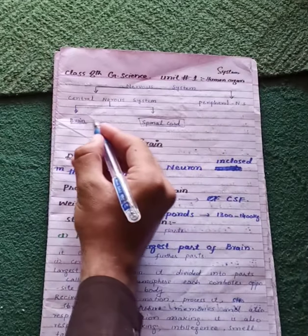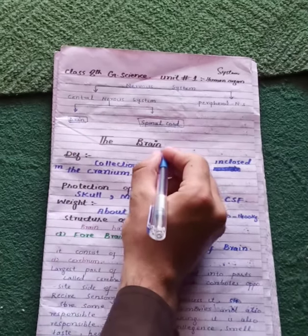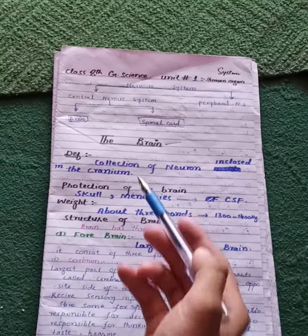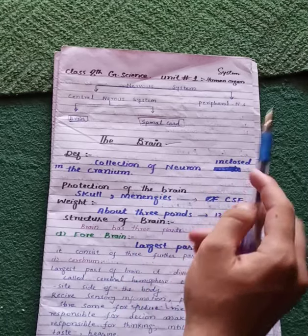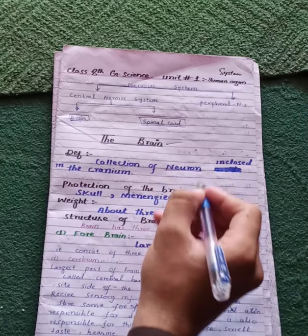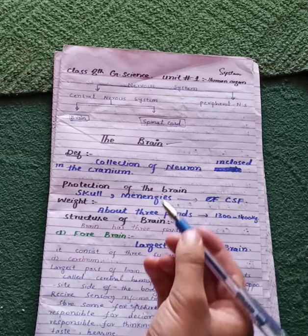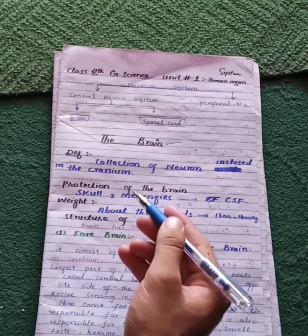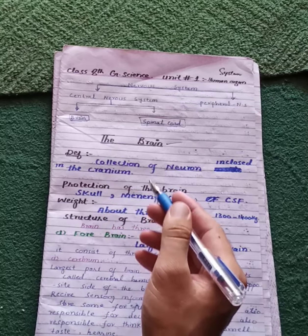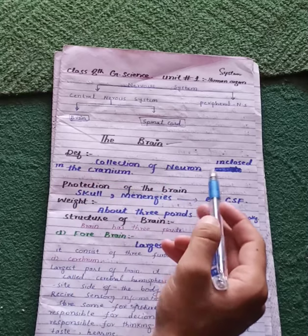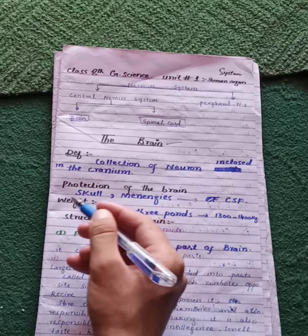The definition of the brain: the brain is a collection of neurons enclosed in the cranium. Neurons are the structural and functional unit of the nervous system. This collection of neurons enclosed in the cranium is called the brain. The cranium is the bony case that protects the brain.